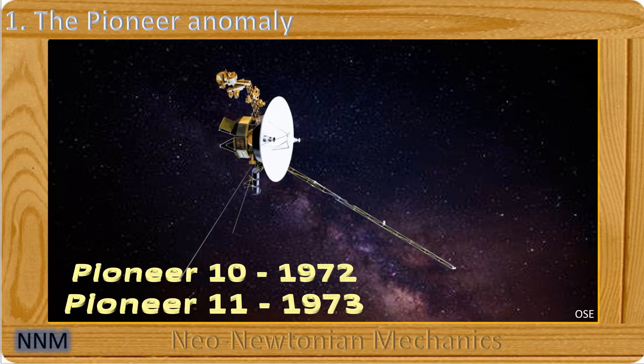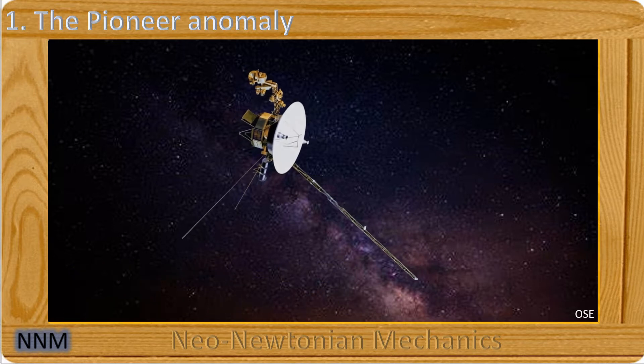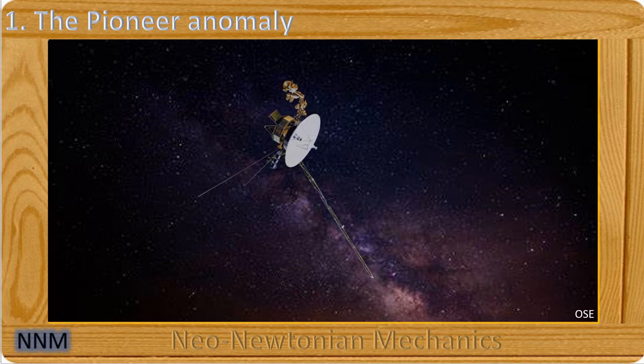Launched in 1972 and 1973, the Pioneer 10 and 11 probes were launched into space. After having passed the orbit of Uranus at 20 astronomical units,